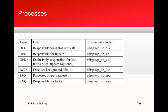The update process appears as UPD in SM50, and there is another called UPD2, which is mainly for non-critical activities. Background processes appear as BGD, spool processes as SPO, and enqueue as ENQ.